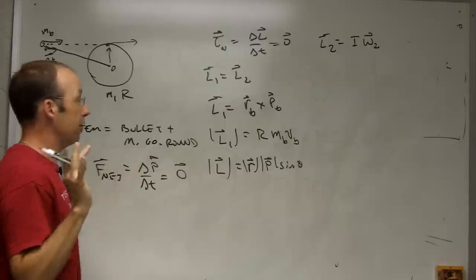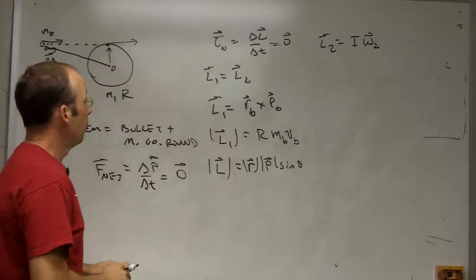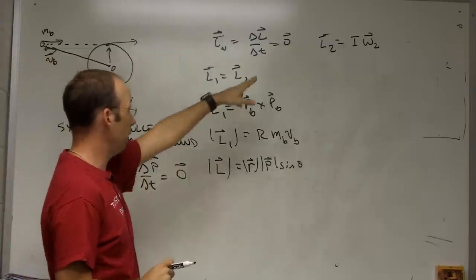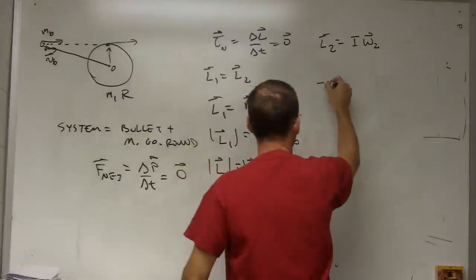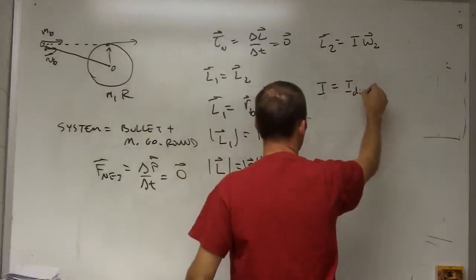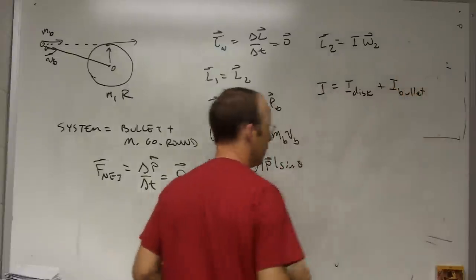And I'm going to do this for any size of bullets. Because maybe, maybe it's a basketball. Maybe it's a bullet. I don't care. So what's I? We already know the magnitude of L2. It's the same as L1. So what's I? I is I disk plus I bullet. We could do it that way.